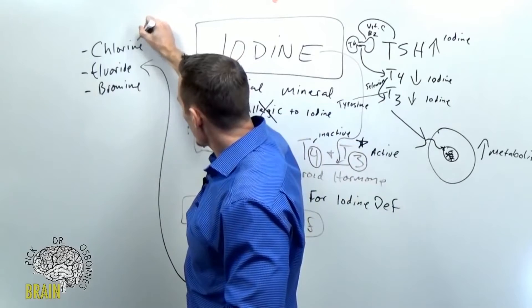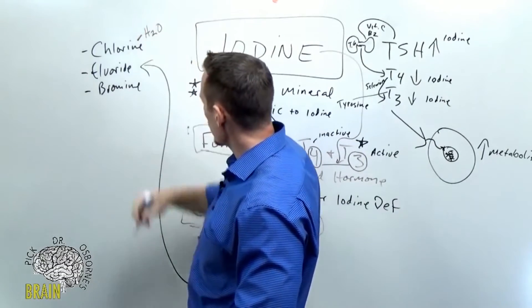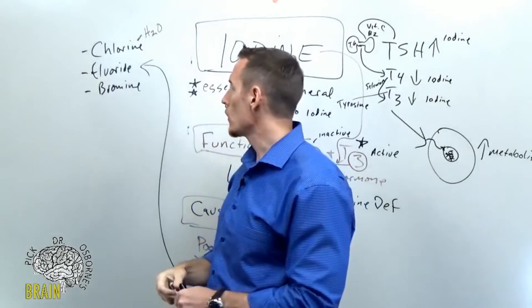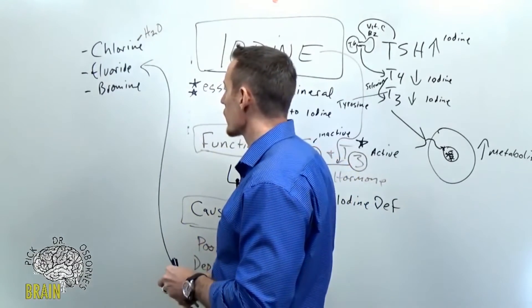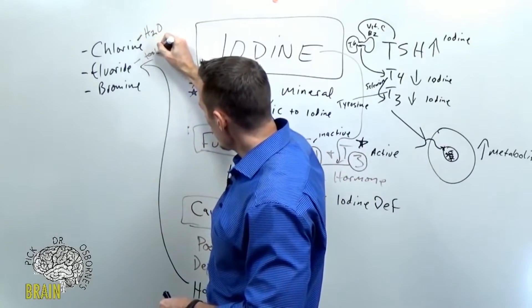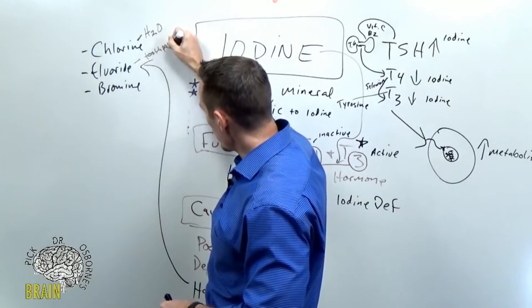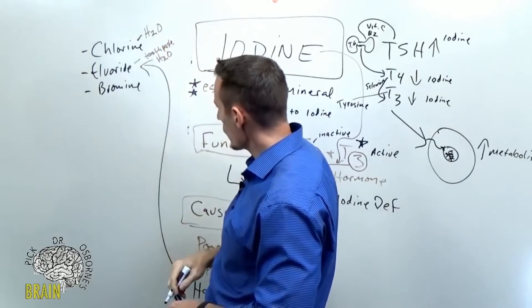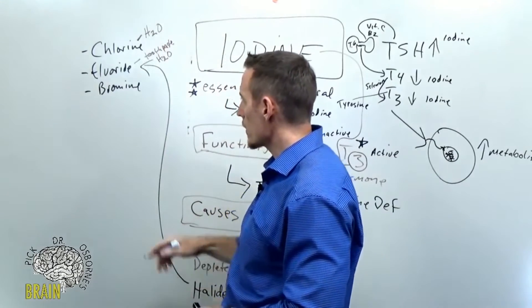People get overexposed to these things. Where do we get those? Chlorines, we get them, a lot of people get it from not filtering their water, drinking water that's chlorinated, or being exposed to high levels of chlorine. We get fluoride in things like toothpaste and mouthwash, in the dental chair, and fluoridated water as well, depending on where you live if there's a fluoridated water process. And then bromine.